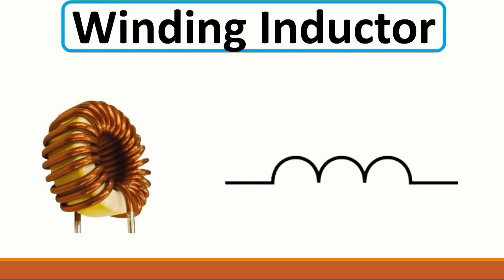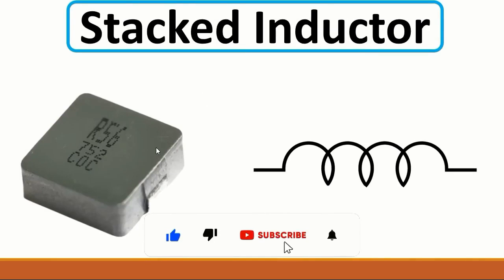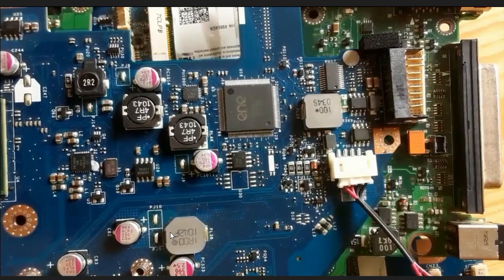Then we have the inductor or coil winding inductor. This is an example we find in the computer motherboard. Then we have the stacker inductor with this symbol. As you can see on the motherboard, we have stacker inductors here as well. The reference for an inductor is 'PL' or 'L'. Here we have PL38 and here we have L13 — you can find L or PL.